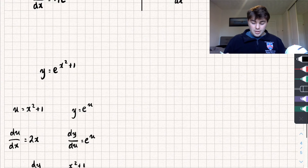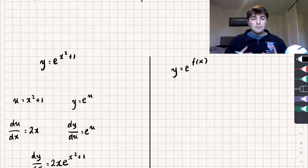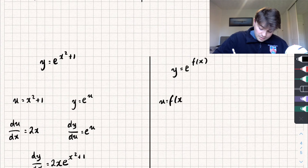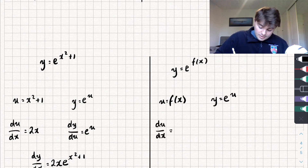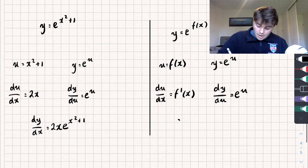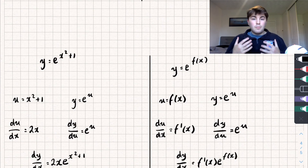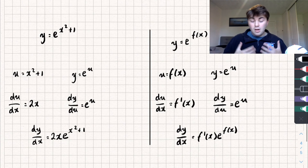What is the general case for this? Say we have y equals e to some function f of x. Using the chain rule: u equals f of x, and y equals e to the u. The derivative of u with respect to x is f dash of x, and the derivative of y with respect to u is e to the u. So dy/dx equals f dash of x times e to the f of x. This tells us that if we have e to the power of some function of x, when we take its derivative we just need to take the derivative of that function and multiply it by whatever we have.